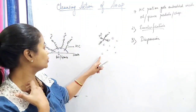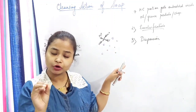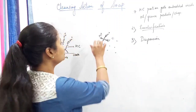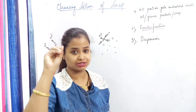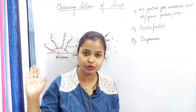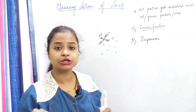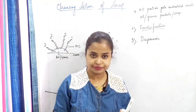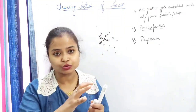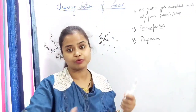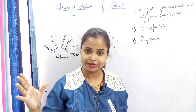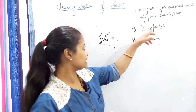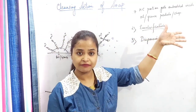When you give it a water wash, the hydrophilic COO⁻ portion — the carboxylate portion — attaches to water, and all the small oil droplets are washed away. The hydrophilic portion of the soap molecule attracts water and washes out all the oil droplets together.